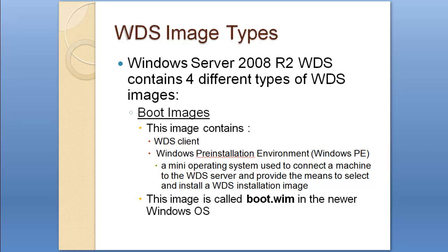Now let's talk about the four types of WDS image types. The first is the boot image. The boot image contains the WDS client along with the Windows Pre-installation Environment. The Windows Pre-installation Environment is basically a mini operating system used to connect a machine to the WDS server and provides the means to select and install a WDS installation image. This image is called boot.wim in newer Windows operating systems.